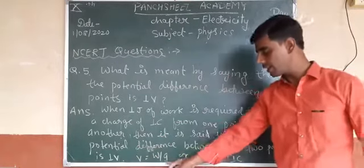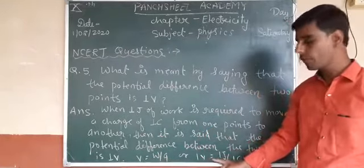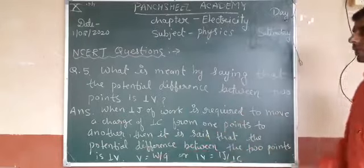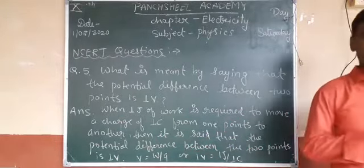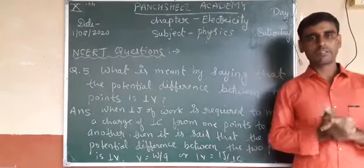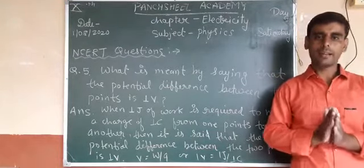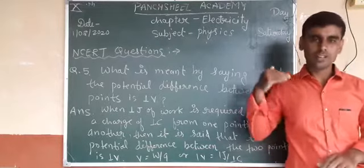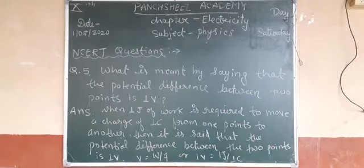Remember the formula: V = W/Q, so one volt equals one joule upon one coulomb. These are the five questions — write all of them in your fair notebook. In our next video we will move on to the next five questions. Thank you.